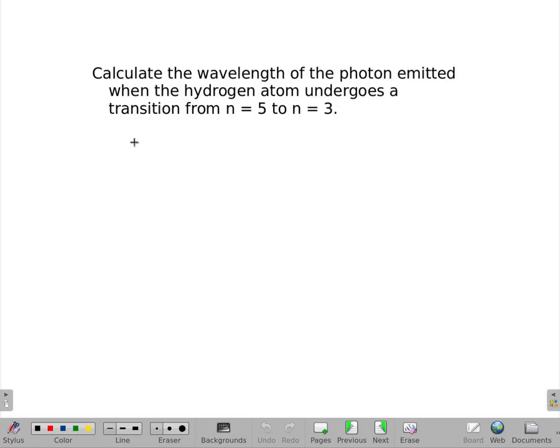Since we're calculating the wavelength, we're going to use Rydberg's equation, which has 1 over lambda equals 1.096776 times 10 to the positive 7th per meter, and then 1 over the two n's, but they will be squared.